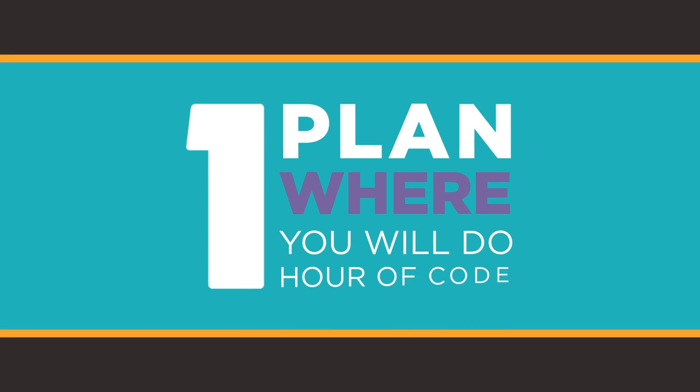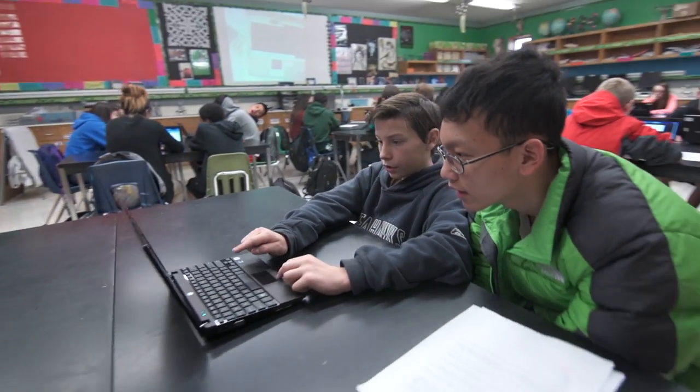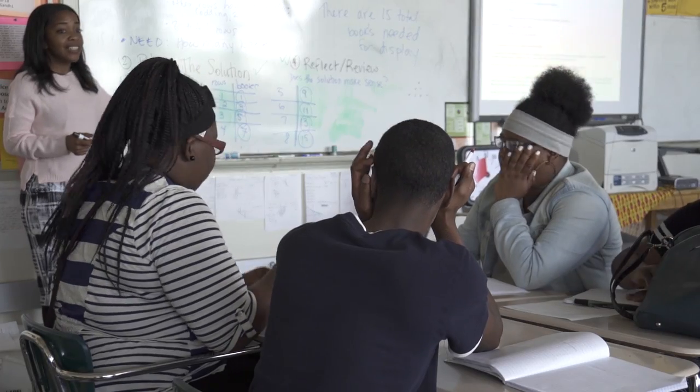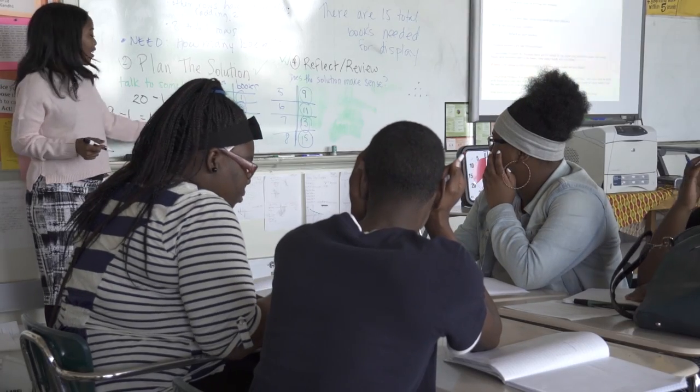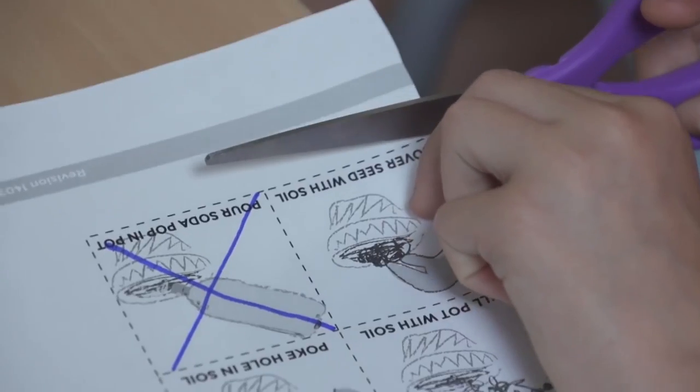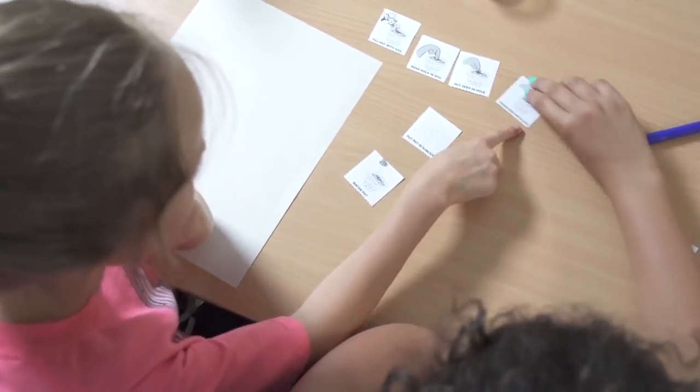Now let's talk about how to host an Hour of Code itself. Step one: plan where you will do your Hour of Code. You can offer the Hour of Code on any device including tablets, PCs, Macs, and smartphones. Students can also take turns using a shared computer or try a tutorial together on the board. There are even unplugged tutorials that can be completed without any computers at all, and unplugged options can be done anywhere, even outdoors.